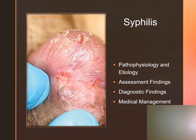Syphilis can occur in three distinct stages: primary, secondary, and tertiary. The client will only be infectious during the primary and secondary stages. People can catch syphilis from transmission of blood of the infected person, directly from a lesion, and it can also cross the placental barrier, in addition to sexual contact. Clients with primary syphilis may experience genital, anal, or cervical chancres, which are painless ulcers.